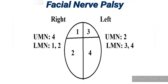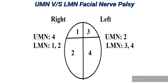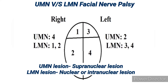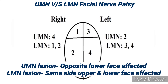Now the difference between upper motor neuron and lower motor neuron facial nerve palsy. Supranuclear lesion in the cortex, internal capsule, or brainstem leads to upper motor neuron lesion, while nuclear and infranuclear lesion leads to lower motor neuron palsy. In upper motor neuron lesion, the opposite lower half of the face is affected, while in lower motor neuron lesion, the same side — both upper and lower face — is affected.